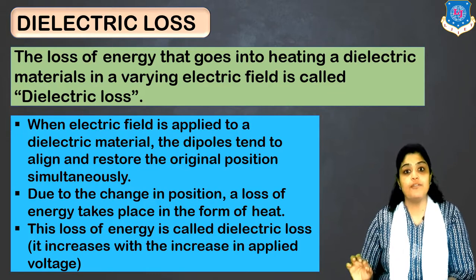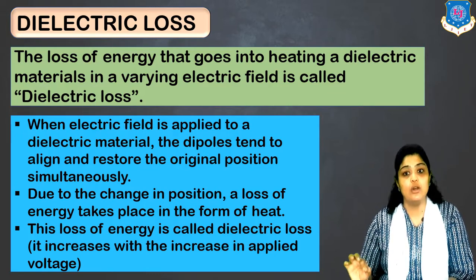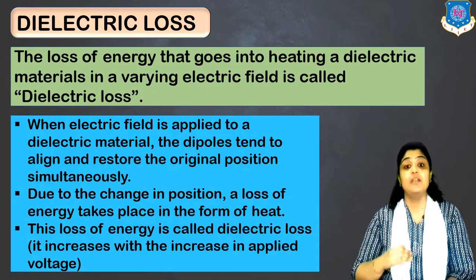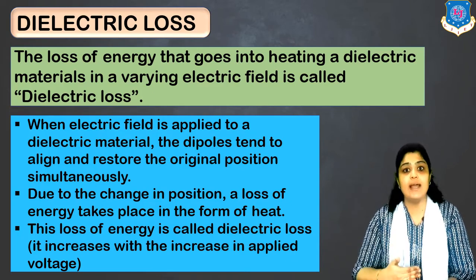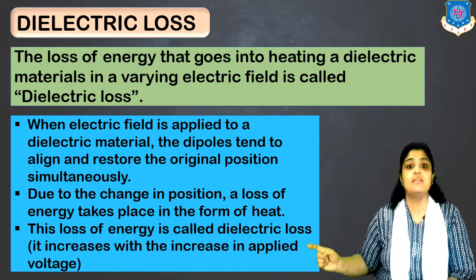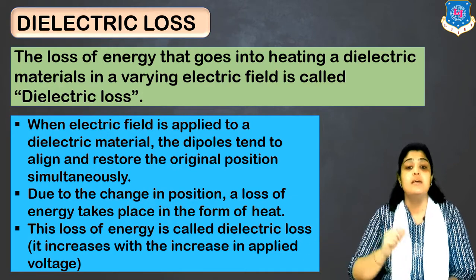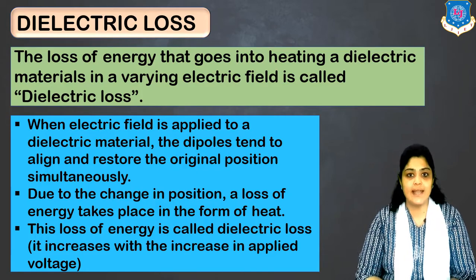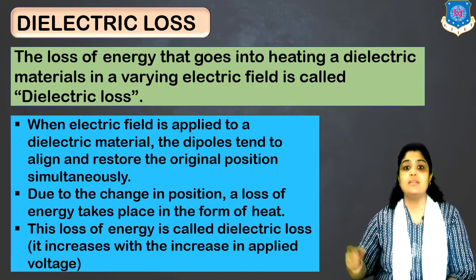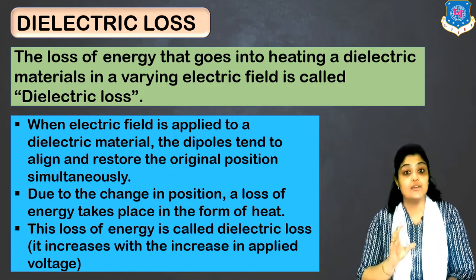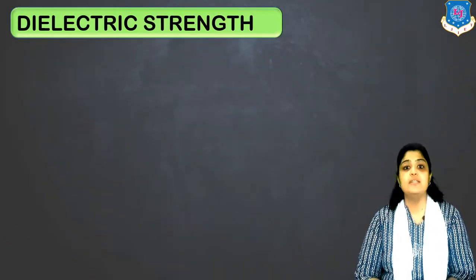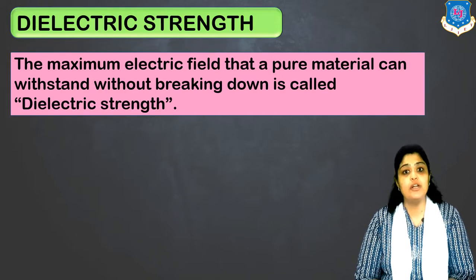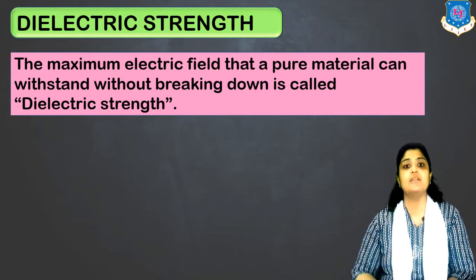This loss of energy in the form of heat is known as dielectric loss. If a very strong electric field is applied to a dielectric material, the value of dielectric loss will increase. So you can say that dielectric loss is proportional to the applied electric field. This is the first important characteristic related to a dielectric material.